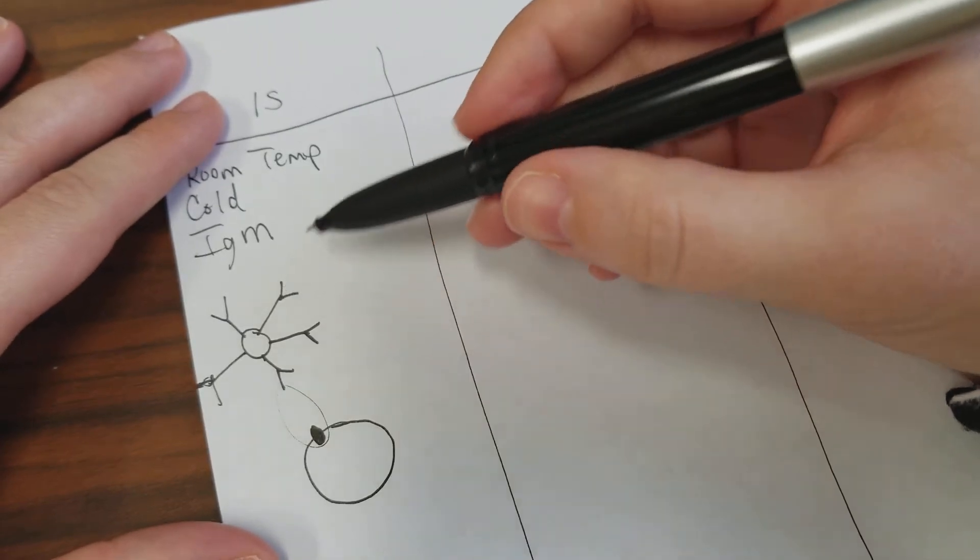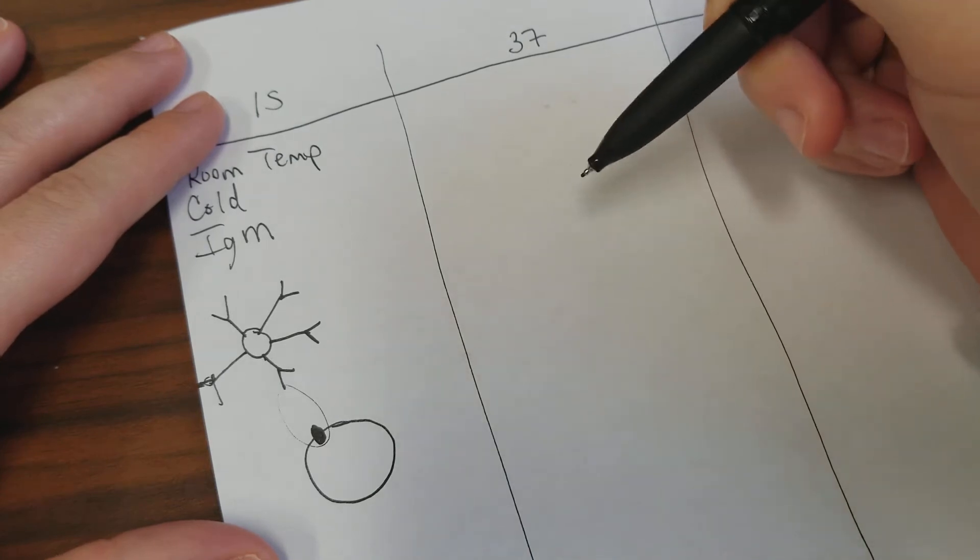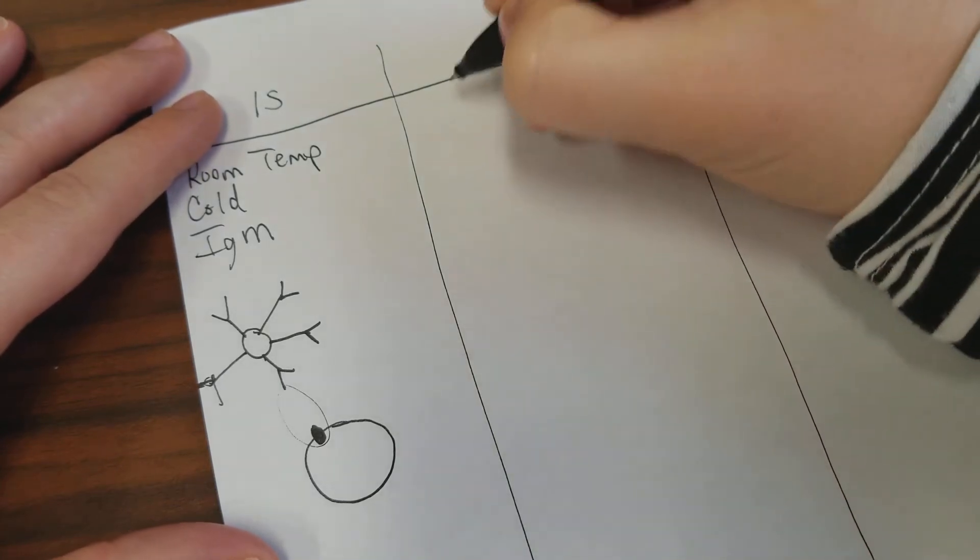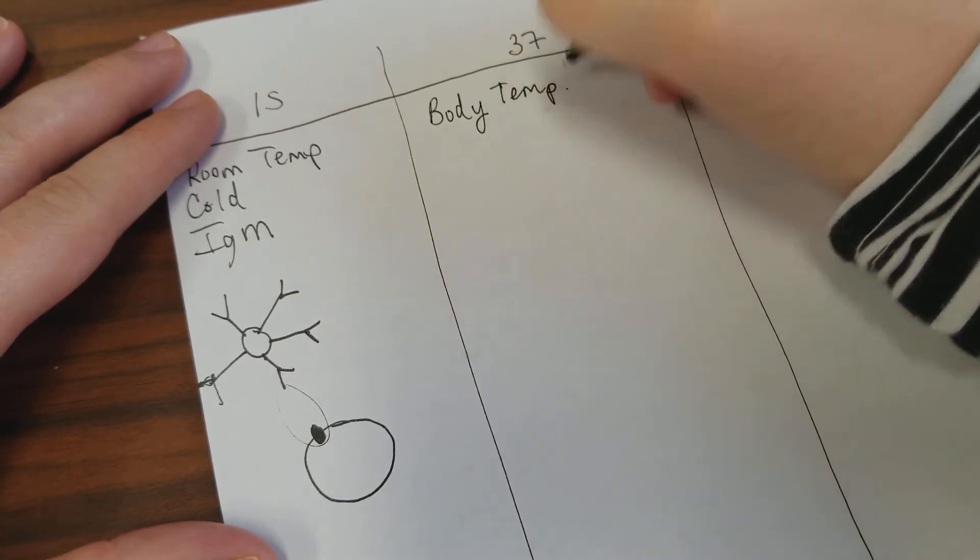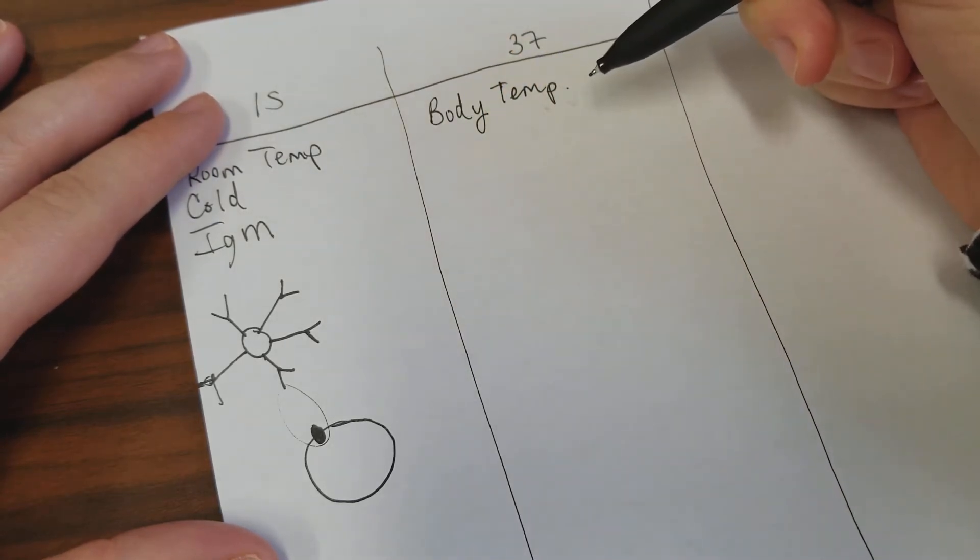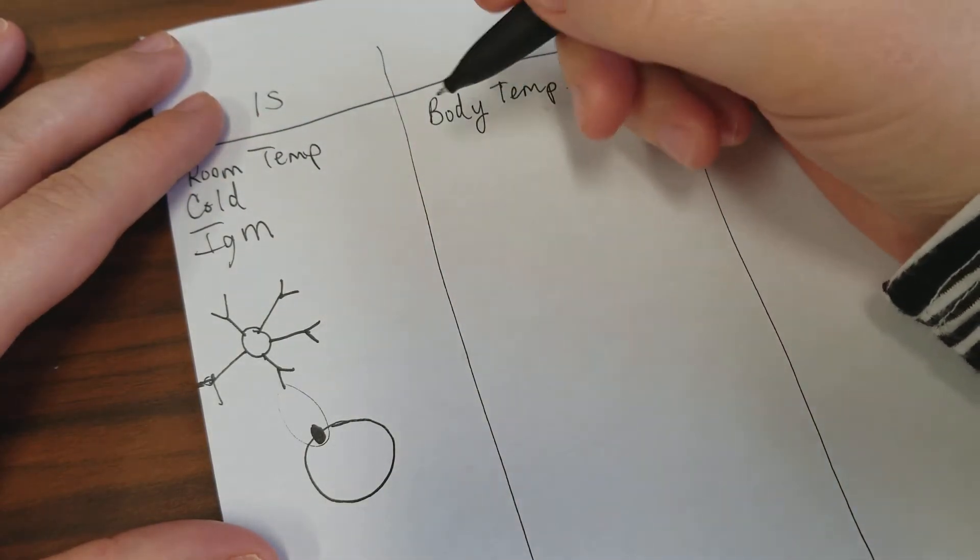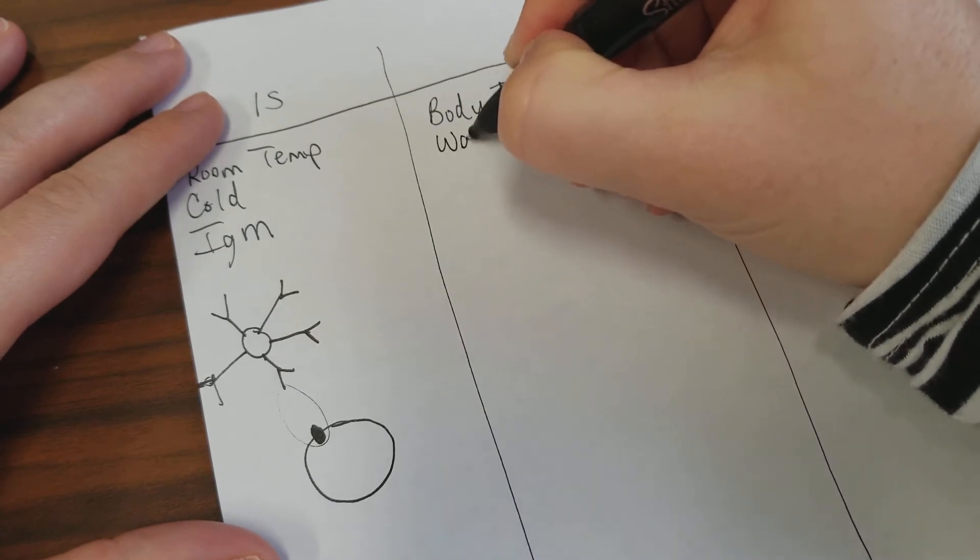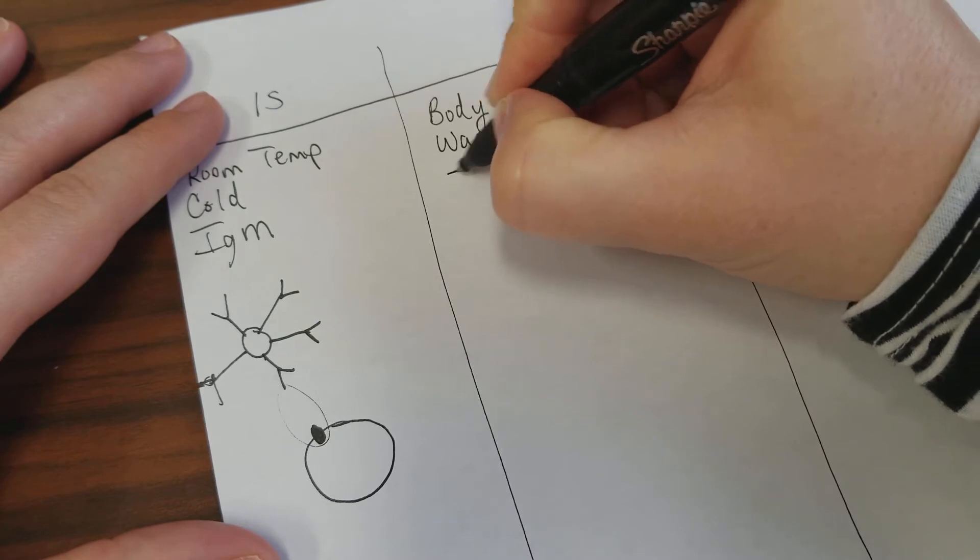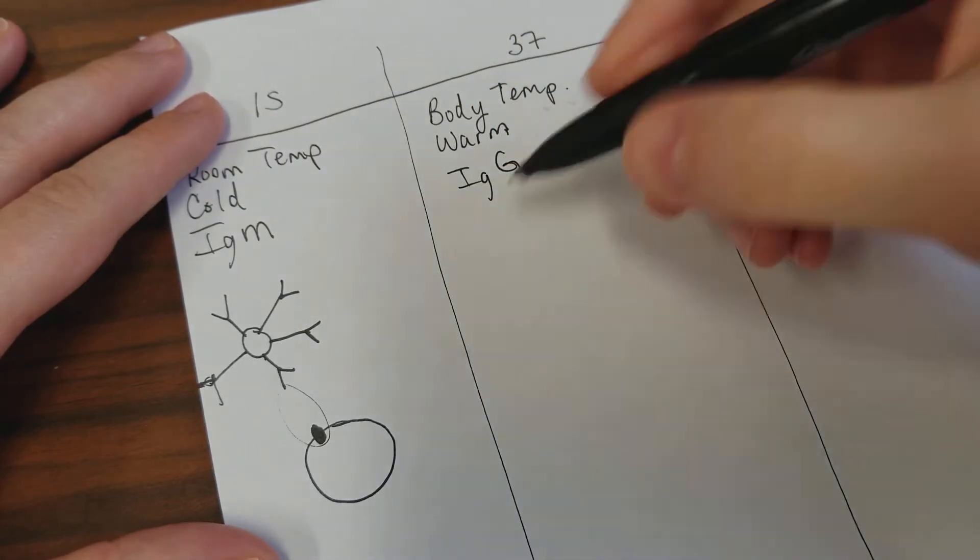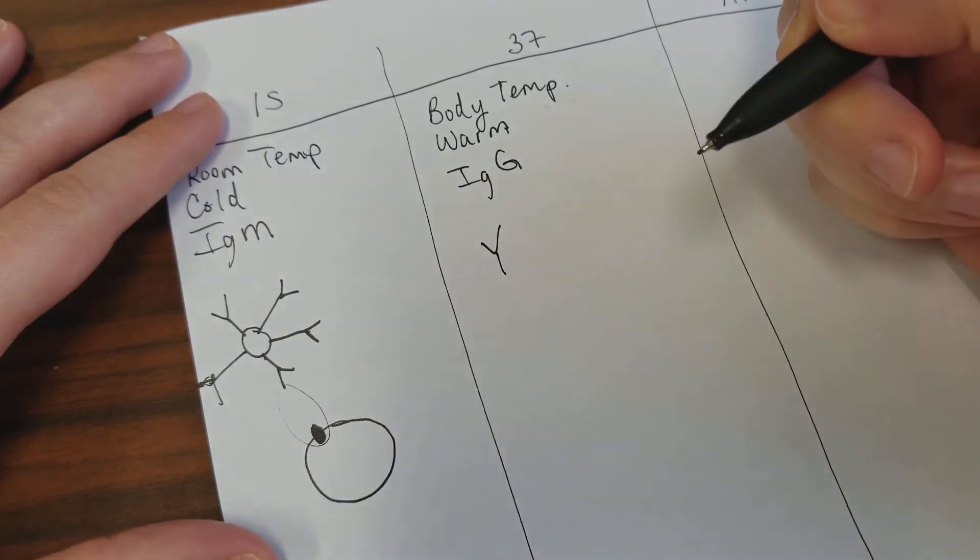Let's move forward to the 37 and talk about why we don't really see too much agglutination here. 37 is body temperature, and since body temperature is higher than that of the surrounding air, we're looking at that as a warm antibody, and mainly we're looking at IgG. IgG antibodies just look like that.